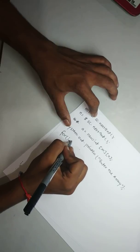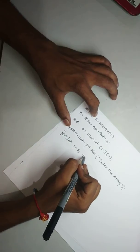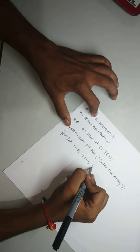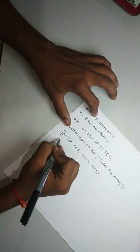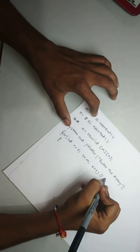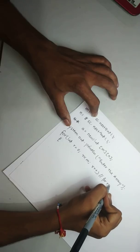For int r is equal to 0, r is less than m, r will be plus plus. This one is for the row, for row.